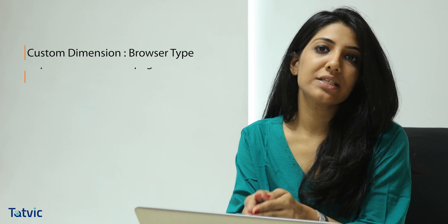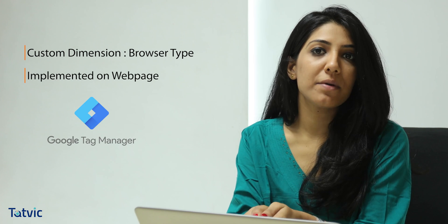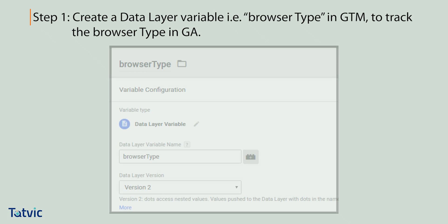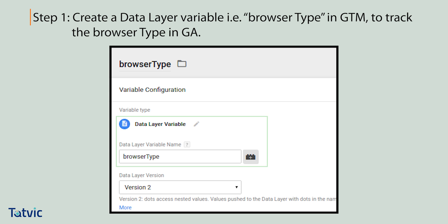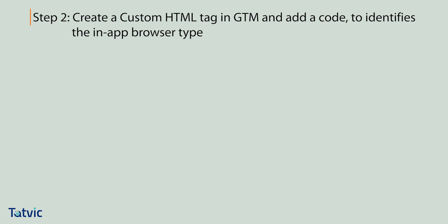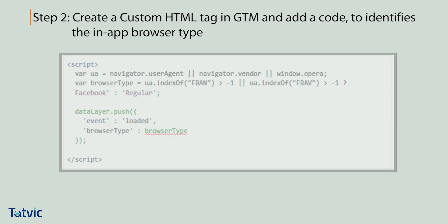The second prerequisite is that you have Google Tag Manager implemented on your website. Step one: create a data layer variable named 'browser type' in Google Tag Manager to track the browser type in Google Analytics.